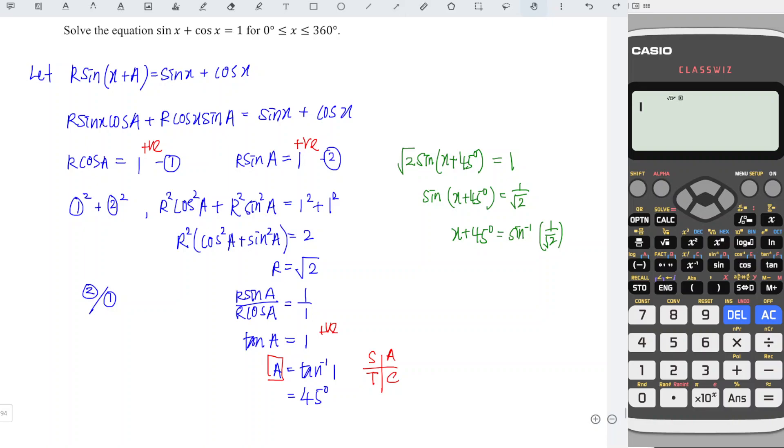Since we obtain positive value for sin, we should have the first quadrant and the second quadrant. From arcsin(1/√2), we get 45 degrees in the first quadrant. For the second quadrant, take 180° - 45° to obtain 135 degrees.